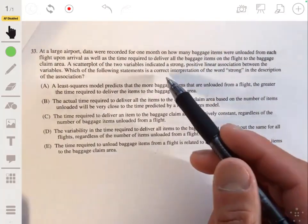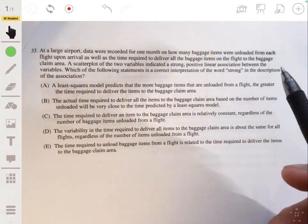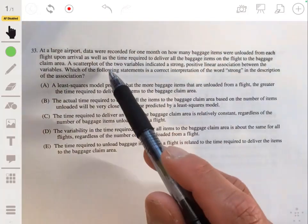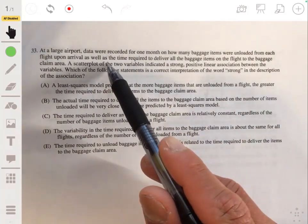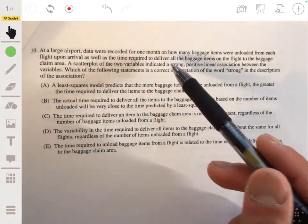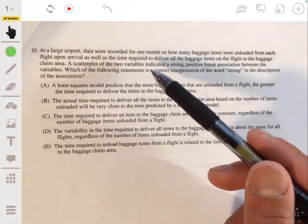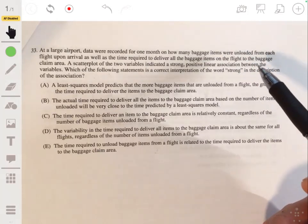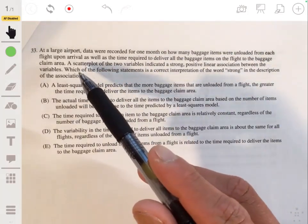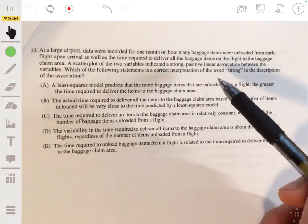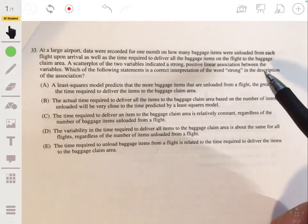Problem 33, a large airport data were recorded for one month on how many baggage items were unloaded from each flight upon arrival, as well as the time required to deliver all the baggage items on the flight to baggage claim area. A scatter plot of the two variables indicated a strong positive linear association between the variables. Which of the following statements is the correct interpretation of the word strong in the description of the association.